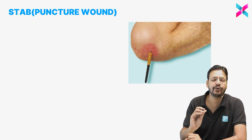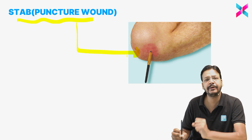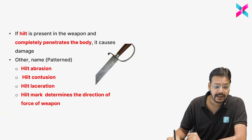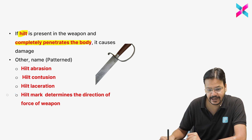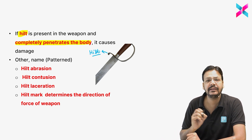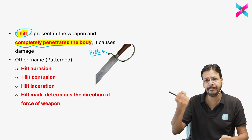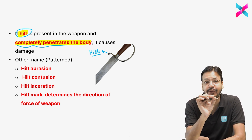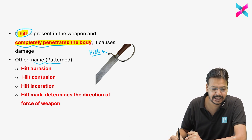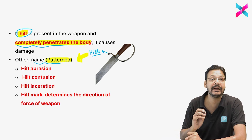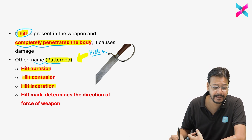This type of stab wound is known as a puncture wound because it punctures the skin or tissue. When a knife completely penetrates the body, if a hilt is present on the weapon, there will be pattern injuries caused by the hilt. These hilt pattern injuries are: hilt abrasion, hilt contusion, and hilt laceration.